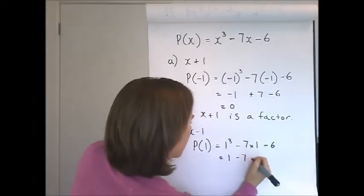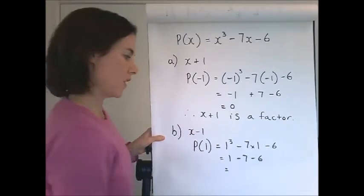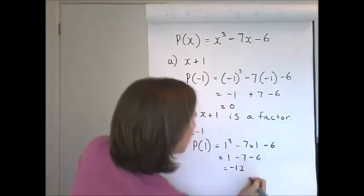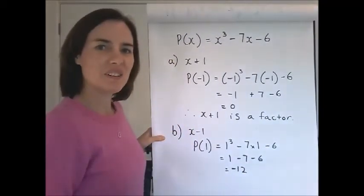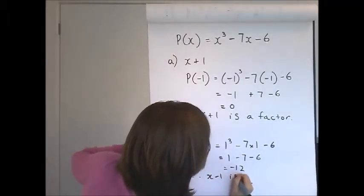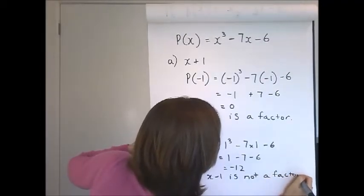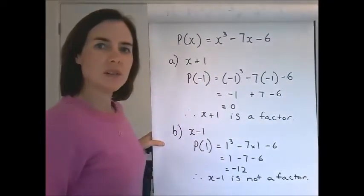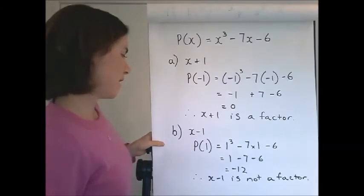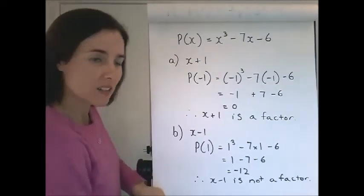1 minus 7 minus 6 is 1 minus 13, negative 12. So no, it's not a factor in this case. So we can write down that x minus 1 is not a factor. Now I'll do C and D on the next page.